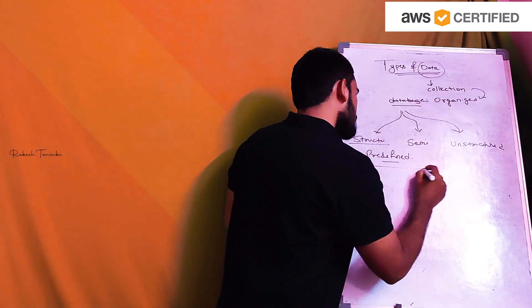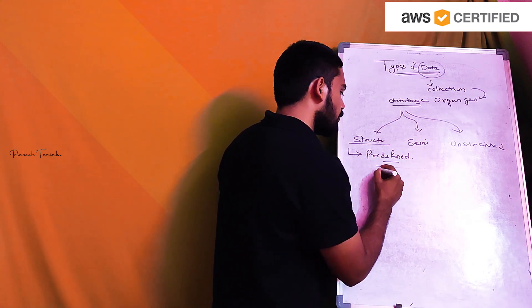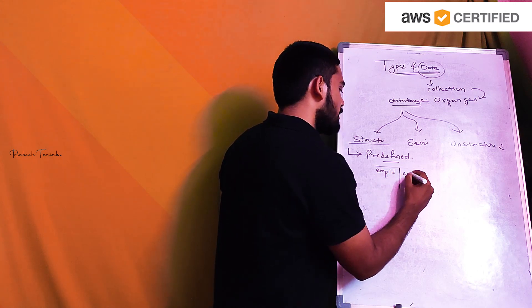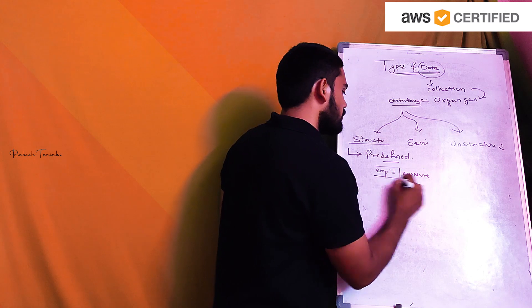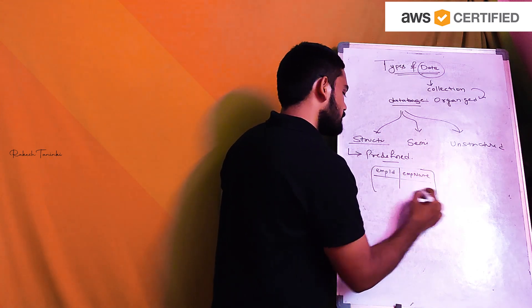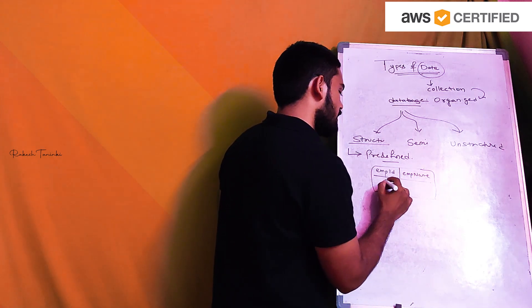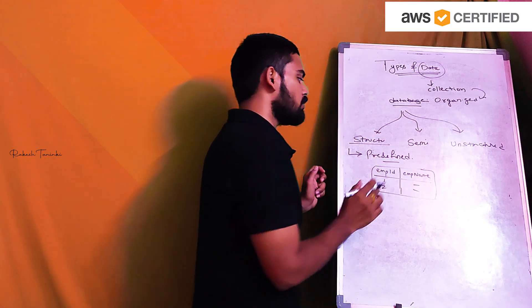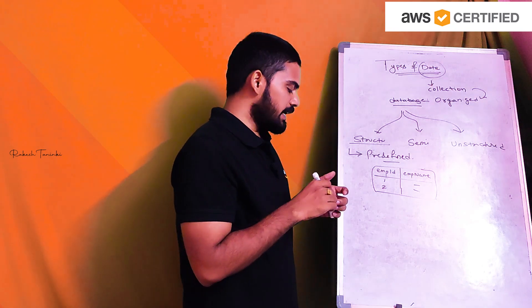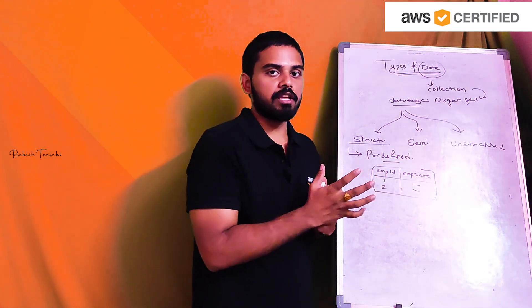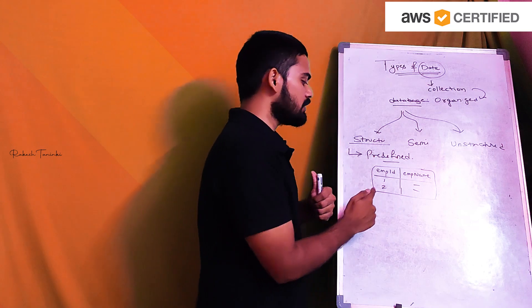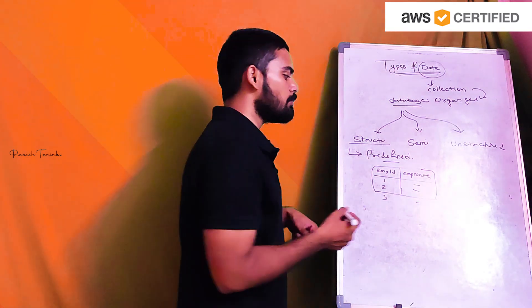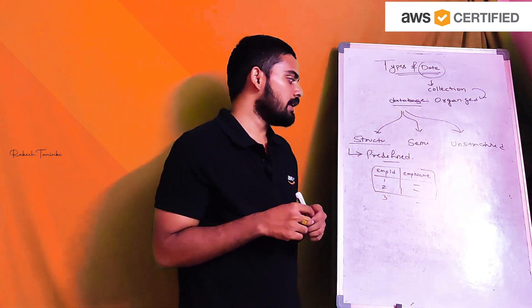We explain the format in table format. This is an employee table. In the employee table, there is an employee ID and the employee name — only two columns. Here is the data with records: the first record, the second record. This is how data is stored in a predefined structure. If you want to add a third record, you simply add an employee name normally.